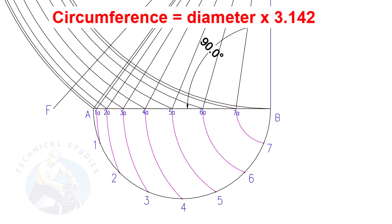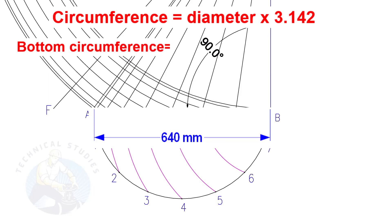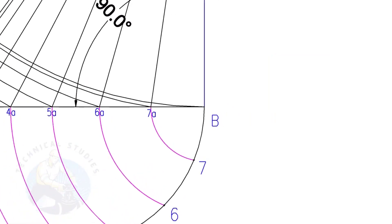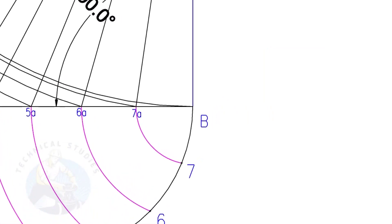Let us calculate the circumference of the bottom side. The formula is diameter multiplied by 3.142. Since the diameter is 640, multiply it by 3.142. The answer is 2010.8 mm. To calculate the arc length of one segment, divide the circumference 2010.8 by 16. The length of one arc is 125.68 mm.